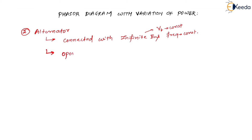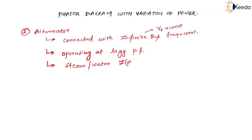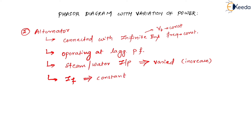We assume the alternator is operating at lagging power factor. The steam or water power input is to be varied — we will increase it. We are talking about active power. The field current is kept constant.